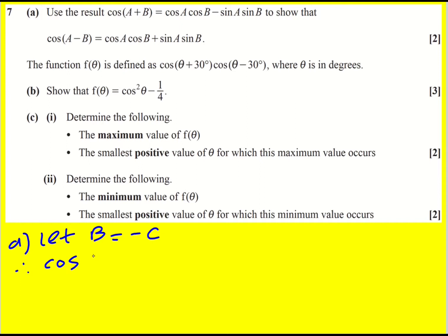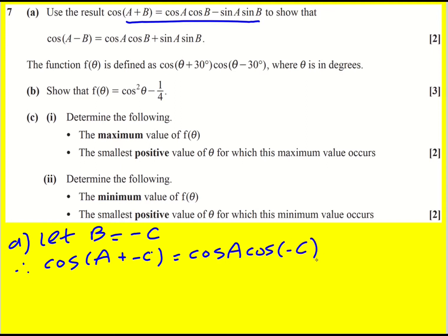So therefore cos(a + (-c)) is going to equal, using this result and replacing all of my b's by minus c, I'm going to get cos(a)cos(-c) minus sin(a)sin(-c). So cos(a-c) is going to equal...